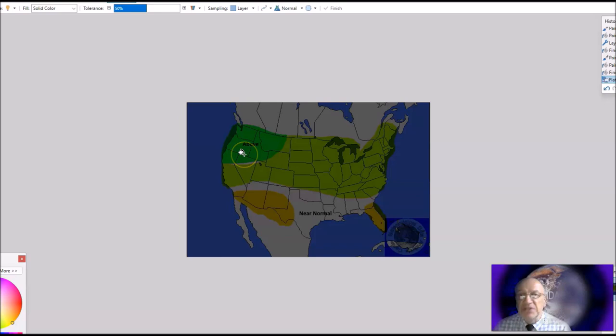And the probability of occurrence is, no, this is wrong map. Okay. Hold on. Okay. This is the right map above normal precipitation forecast for much of the country.